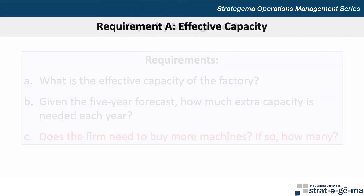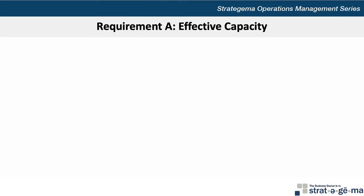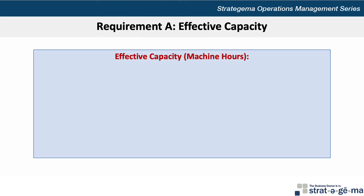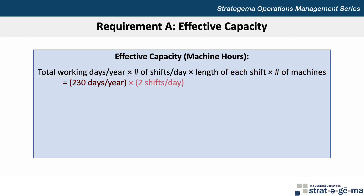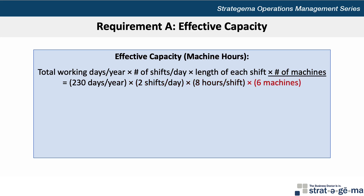For requirement A, the first step is to determine the effective capacity in machine hours, which is calculated as the total working days per year, times the number of shifts per day, times the length of each shift, times the number of machines. So that's 230 days per year, times 2 shifts per day, times 8 hours per shift, times 6 machines, which results in a total of 22,080 machine hours.